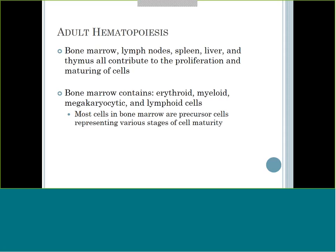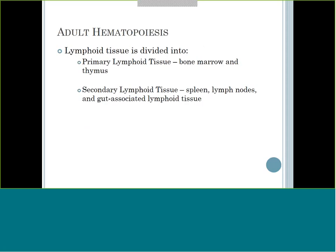We also have lymphoid tissue divided into primary and secondary. Primary lymphoid tissue is your bone marrow and your thymus. Lymphocytes have two different types: B lymphocytes that get made and differentiated in the bone marrow, and T lymphocytes that become T lymphocytes in the thymus - T for thymus. Secondary lymphoid tissue also contributes to development of lymphocytes, but the primary tissues are the bone marrow and thymus.